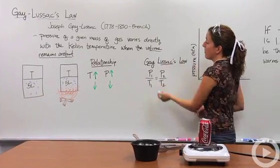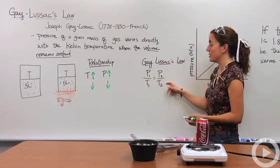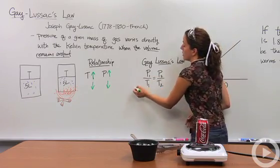So let's put this in mathematical formula. Pressure 1 over temperature 1 equals pressure 2 over temperature 2. Because this is a direct relationship, they are divided by each other.